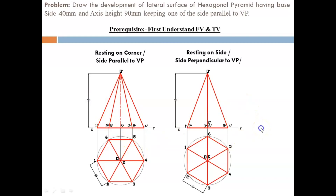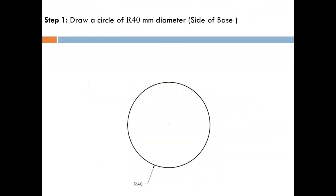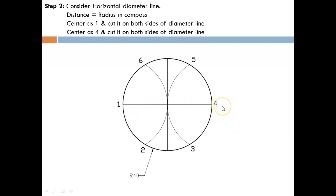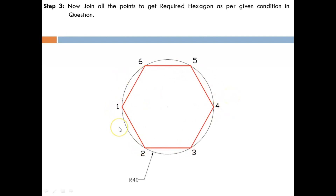We will start with the top view and draw it as a hexagon using the circle method. First, draw a circle of radius 40 mm, because the base side of the hexagon equals 40 mm — so the radius equals the side. Consider the horizontal diameter line of the circle; with center 1 and distance equal to the radius, draw an arc cutting on both sides. Repeat with center 4, draw an arc cutting on both sides, giving four intersection points. Name all points in sequence and join them to get the required hexagon, where one side is parallel to the XY line.